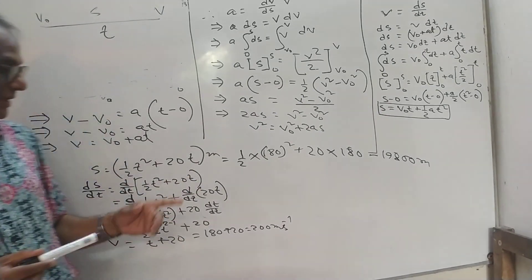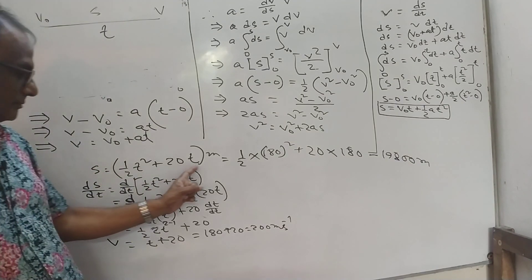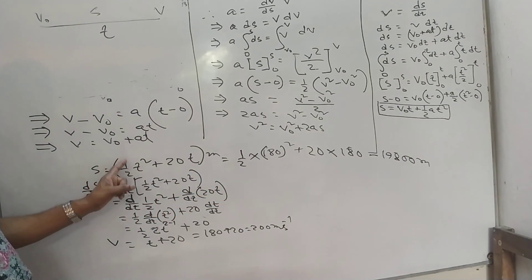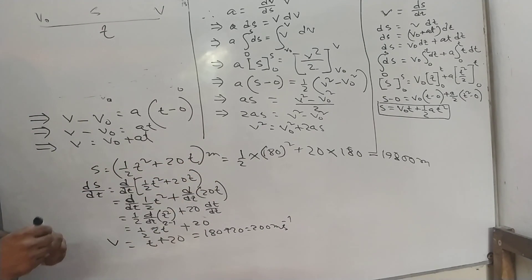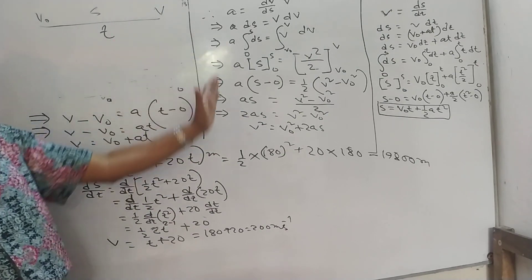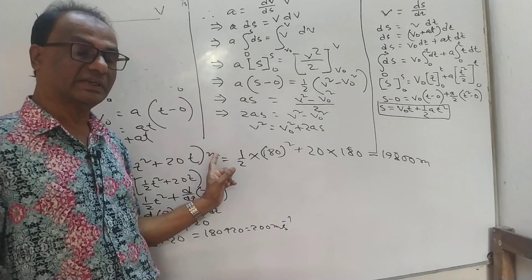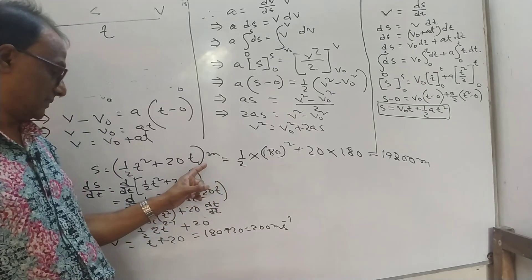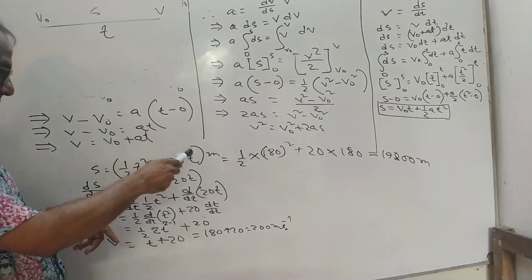Dear students, here a problem is given: s equals half t squared plus 20t meters. Now how can we calculate the displacement if t has been given here as three minutes?